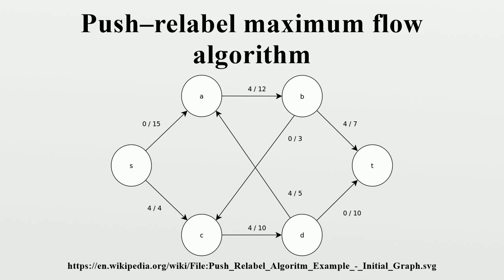The relabel operation applies on an active vertex U without any admissible out-edges in GF. It modifies the height H to the minimum value such that an admissible out-edge is created. Note that this always increases H and never creates a steep edge, which is an edge such that the residual capacity is greater than 0 and H(U) greater than H(V) plus 1. The relabel sets H(U) equal to the minimum H(V) plus 1 over all residual neighbors V.